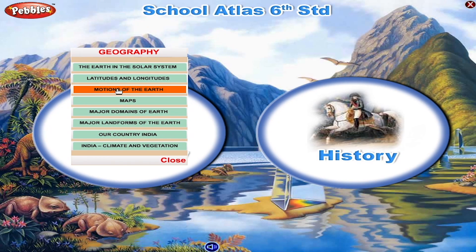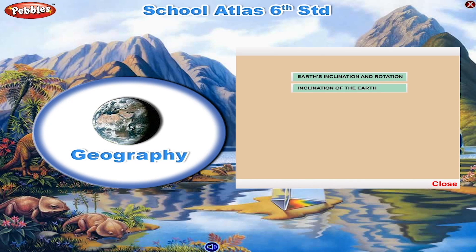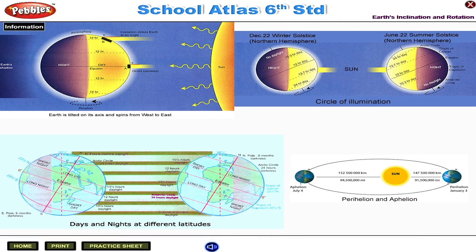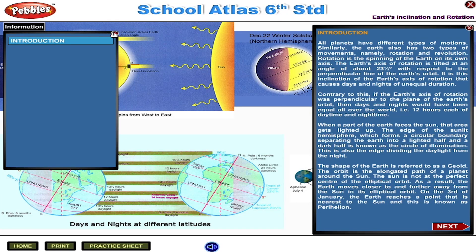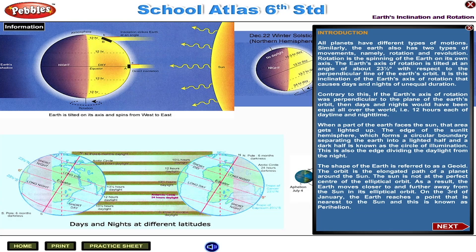Geography: Motions of the Earth's inclination and rotation. All planets have different types of motions. Similarly, the Earth also has two types of movements, namely rotation and revolution. Rotation is the spinning of the Earth on its own axis.